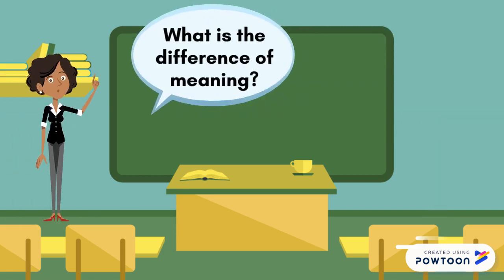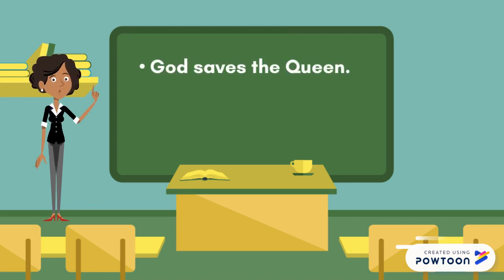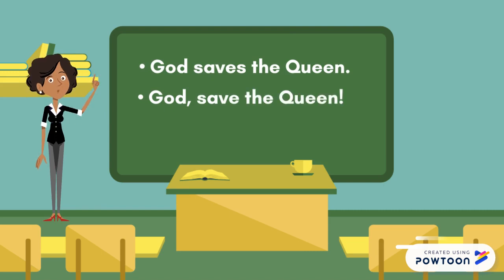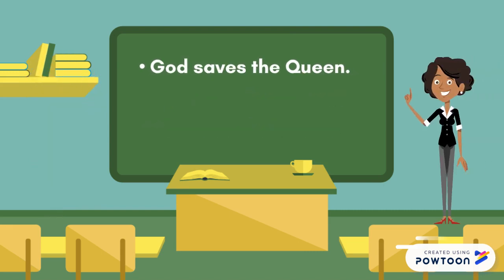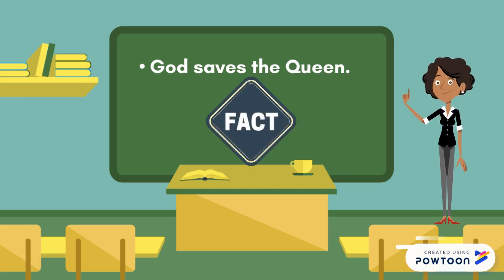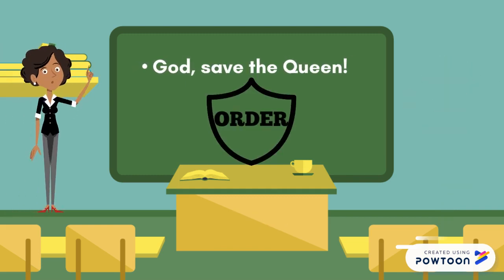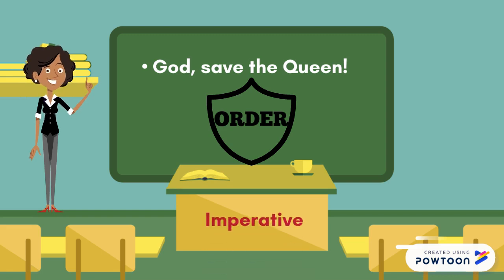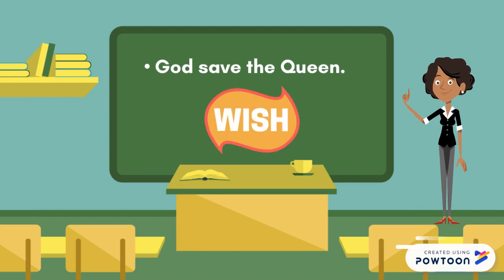What is the difference of meaning between 'God saves the Queen,' 'God save the Queen,' and 'God saved the Queen'? In the first sentence, the speaker enunciates a fact — a statement — and they use the indicative mood. In the second sentence, the speaker gives an order directly to God and they use the imperative mood. In the third sentence, the speaker expresses a wish and they use the subjunctive mood.